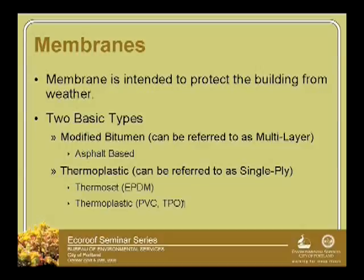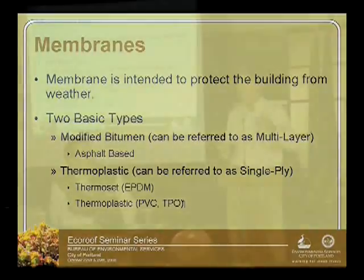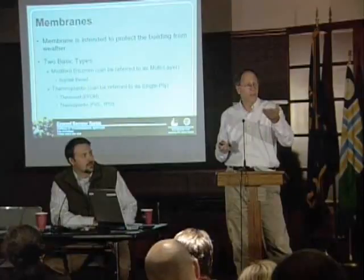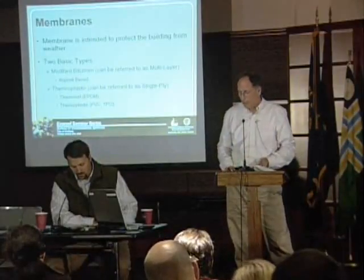First, membranes: a membrane is intended to protect the building. There are two basic types we're referring to. A modified bitumen, where the asphalt has been modified with a petroleum waste product that gives it more elasticity, making it a better product. And then thermoplastics, also referred to as single plies — thermal set is EPDM. The common acronyms — EPDM, TPO, PVC — are usually a single layer that comes pre-manufactured in rolls. Modified bitumens often come in liquid or rolls, or sometimes both: a liquid covered with a cap sheet.